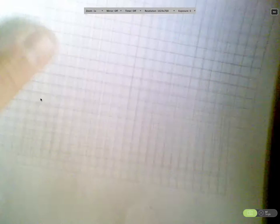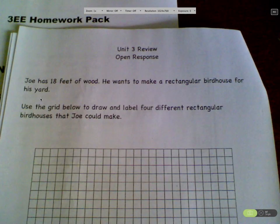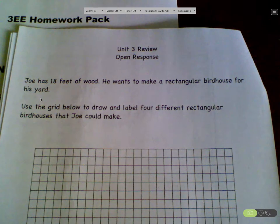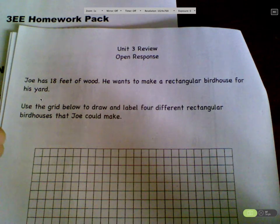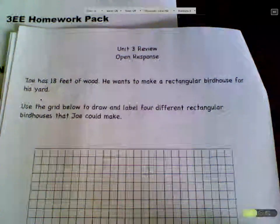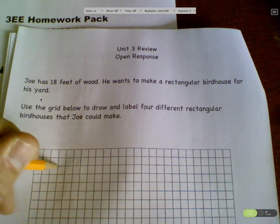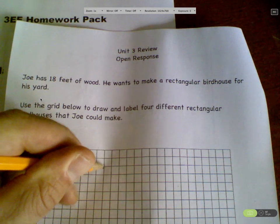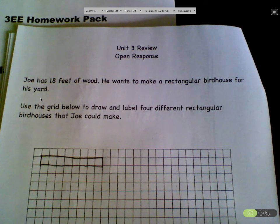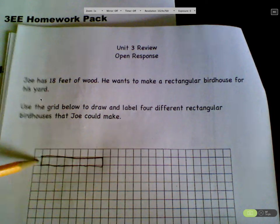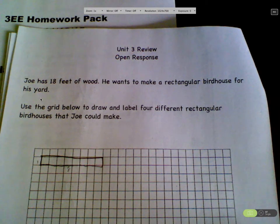And then on this one, what they're going to have you do, you've got eighteen feet of wood. He wants to make a rectangular birdhouse for his yard. The grid below, four different rectangular birdhouses that Joe could make. Okay. So, I've got eighteen pieces of wood. So, the perimeter always has to be eighteen. Well, one of them could be one by eight. Okay. There's one. Is it rectangular? Yeah. Is it a perimeter of eighteen? Yeah. It is. One by eight. That's nine. That's eighteen.